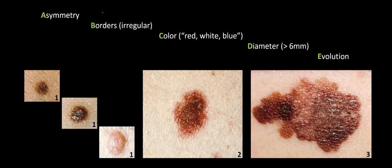The best way to cement these ABCDE features is to go through each one in turn. Starting with A for asymmetry: looking at this malignant melanoma on the right, if we were to draw a line of potential symmetry through this lesion, you can already note that both sides don't look identical. If we flipped the lesion onto itself it would not be a perfect match, and so we say this lesion is exhibiting a high degree of asymmetry.